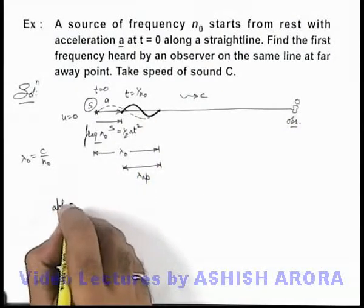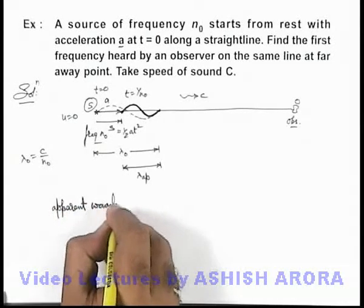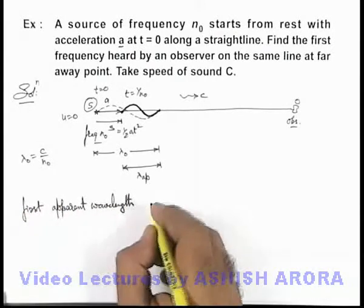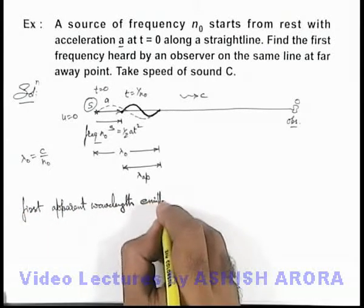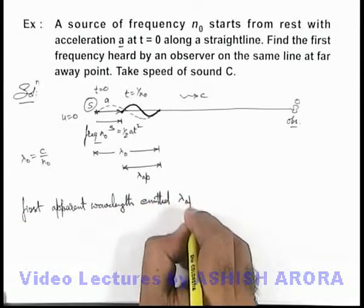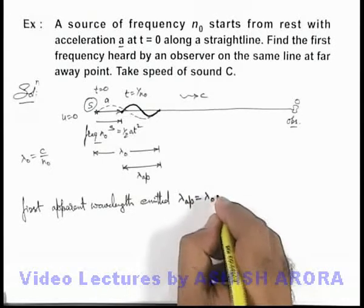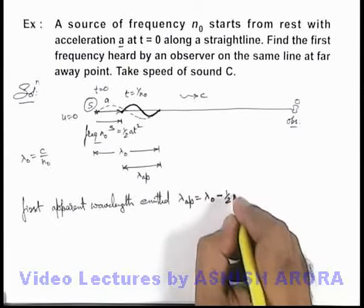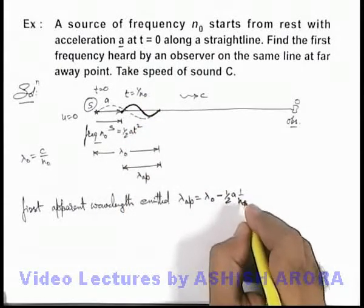We can simply write apparent wavelength, first apparent wavelength emitted can be written as λ_apparent = λ₀ - ½at². This can be written as ½a times 1/n₀ squared. So this can be written as apparent wavelength which is emitted.